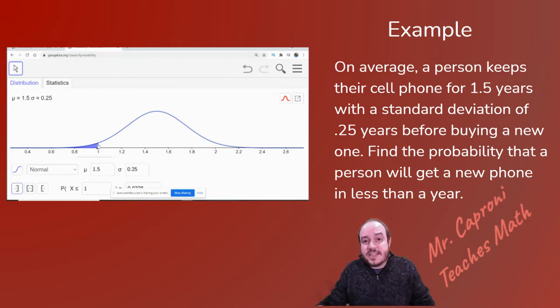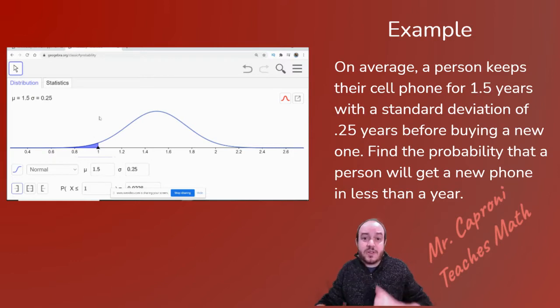Now in this example, it says less than one. Now remember, less is always to the left, and more is always to the right. So in this case, we're going to shade to the left. That's what we're clicking. I'm making sure there. And it's already set at one, but let's go ahead and plug one in and hit enter anyway. And you'll notice that gives us 0.028. In other words, there's about a 2.8% chance that someone would buy a new cell phone in a year or less.